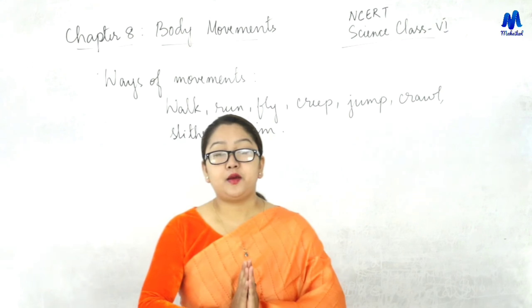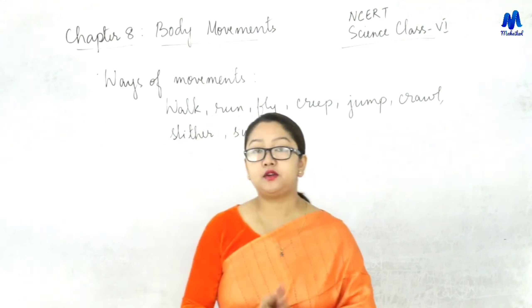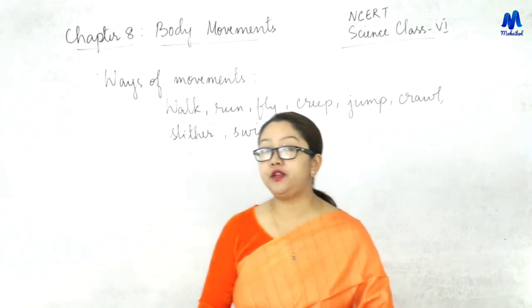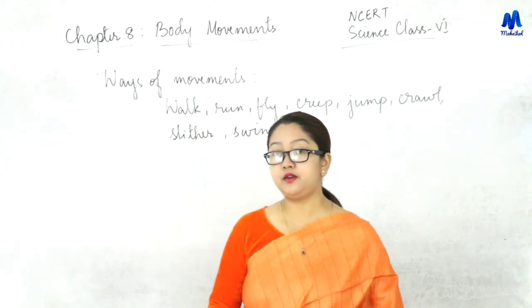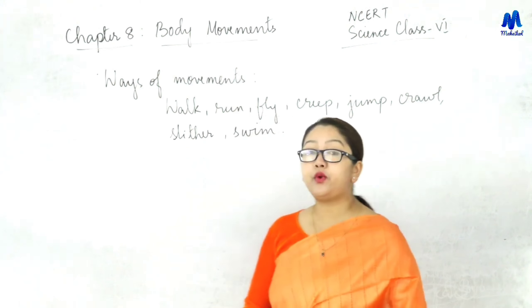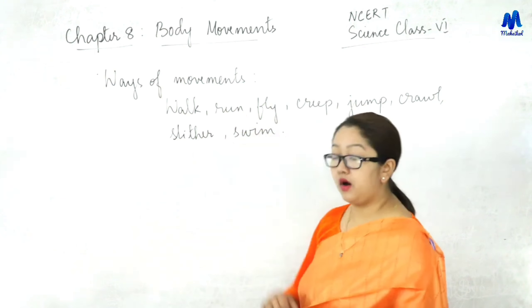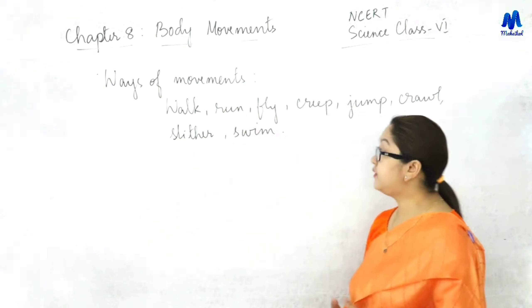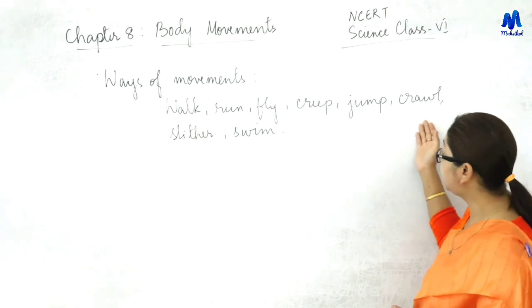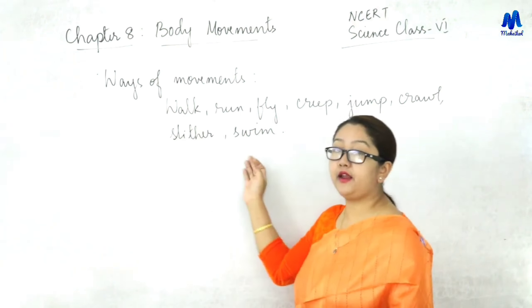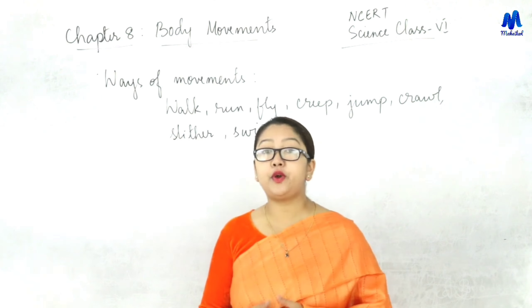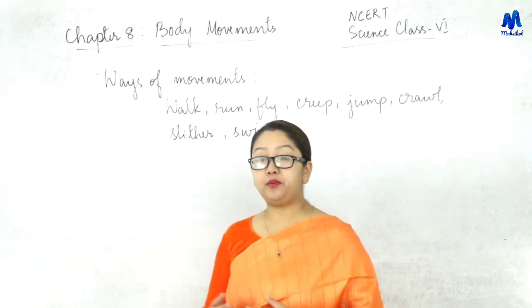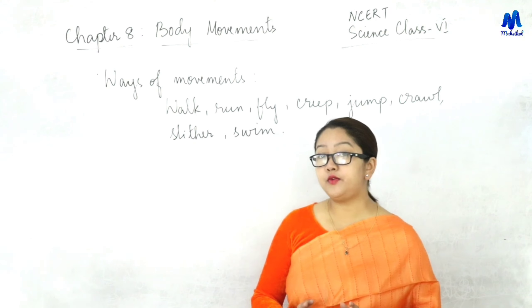We will find this chapter very interesting, learning about the gaits of different animals and how they use different parts of their body for movement. Many different animals found on Earth move in their own unique way. Some of the ways of movement found in animals are walking, running, flying, gripping, jumping, crawling, slithering, and swimming.